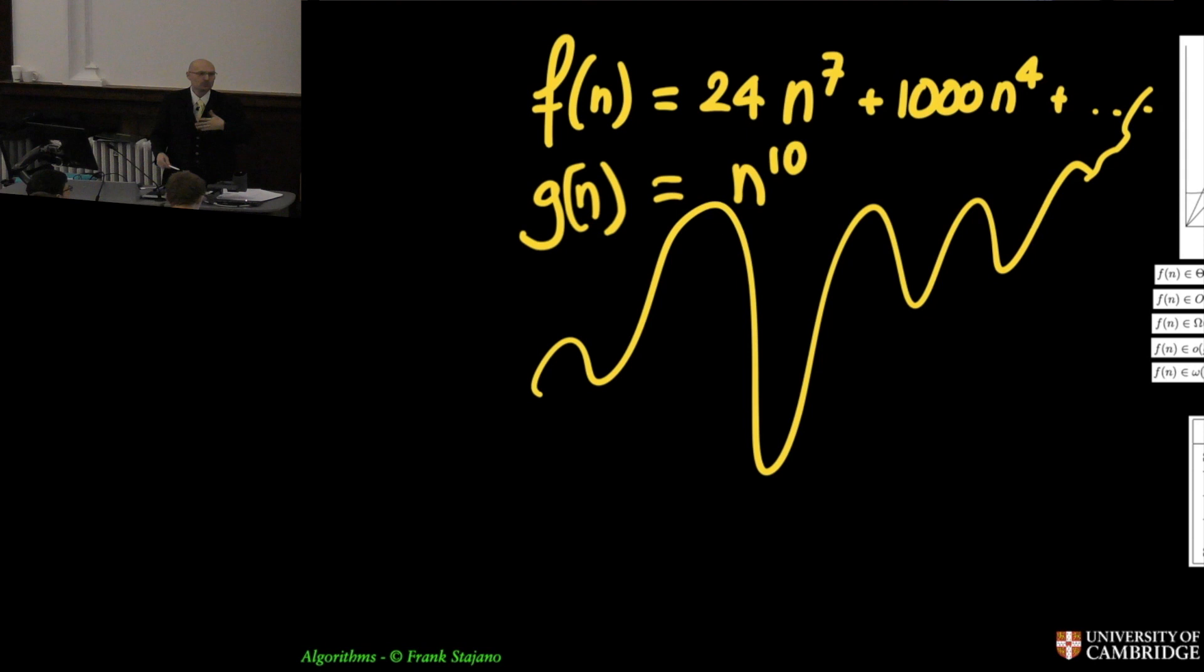For example n to the tenth, right? And g of n is a bound for f of n in the sense that g of n will always win over f of n. Well it's not true because this has a 24 in here and so at some point this 24 n to the seventh, for example when n equals 1, is greater than n to the 10. But if you go sufficiently far to the right there will always be a point where n to the 10th wins over here even if this is not 24 but it's 24 million. At some point this will always win.